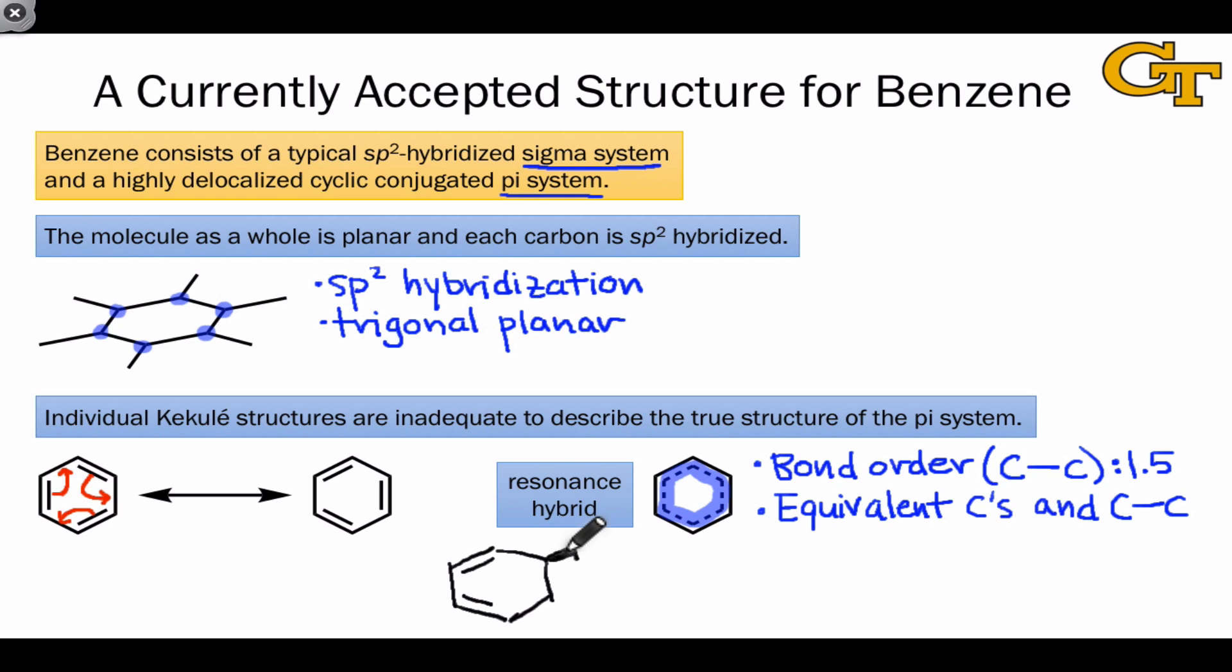For example, if Br2 added across the atoms of benzene, we'd end up with a structure like this, which isn't fully conjugated, since these carbons to which bromine has added are now sp3 hybridized.